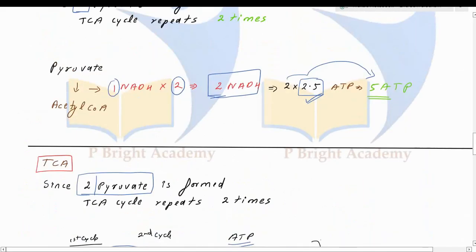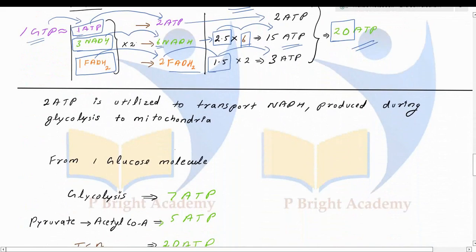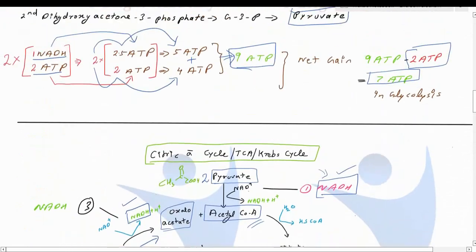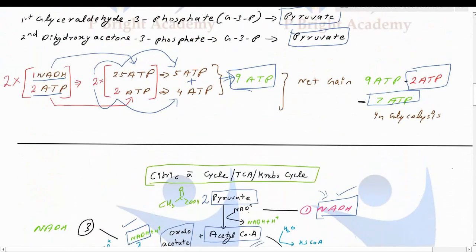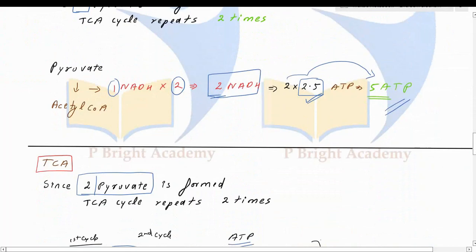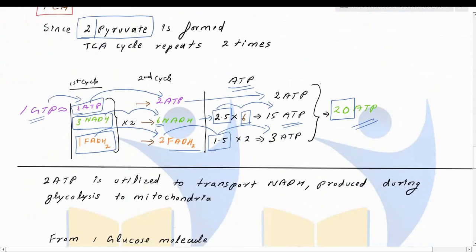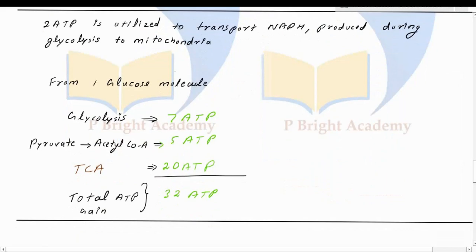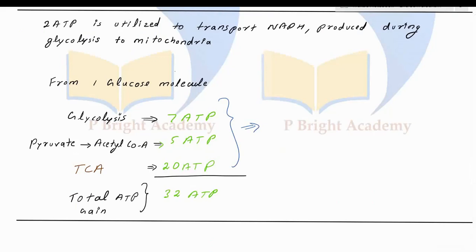When pyruvate is converted to acetyl-CoA, we get 5 molecules of ATP. The net gain in the glycolytic pathway was 7 ATP. Taking into consideration all pathways — glycolysis plus TCA cycle — the total output of ATP is 32, when one molecule of glucose is converted to pyruvate and enters the TCA cycle.